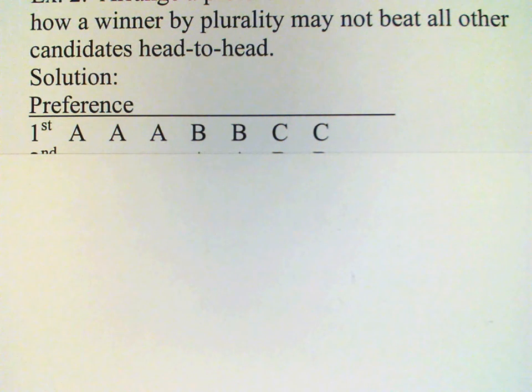Here we have a preference table with three candidates, A, B, and C. A has three first preference votes, and B and C each have two.